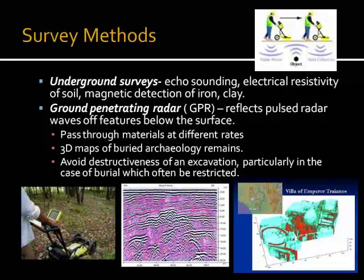Other survey methods include underground surveys where you use echo sounding or electric resistivity of the soil for magnetic detection of iron or clay. There is also ground-penetrating radar, which looks very similar to a lawn mower — you push it over the surface and the waves it sends out go through materials at different rates. From these different rates, 3D maps can be created of the buried archaeological remains. This avoids the destructiveness of excavation, particularly in the case of burials, which may often be restricted in terms of access to archaeologists.